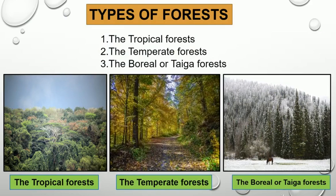The tropical forest is a type of forest found in areas with high regular rainfall, no low temperature, and containing a completely closed covering of trees that prevents the entry of sunlight to the ground.